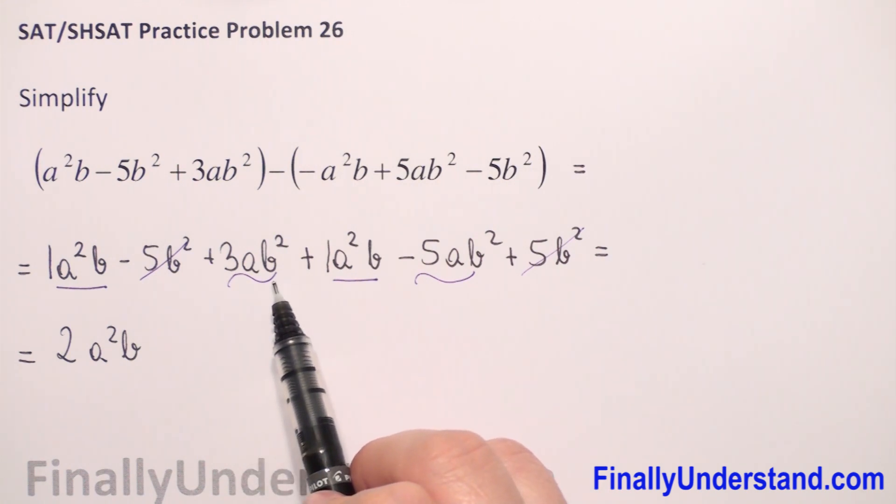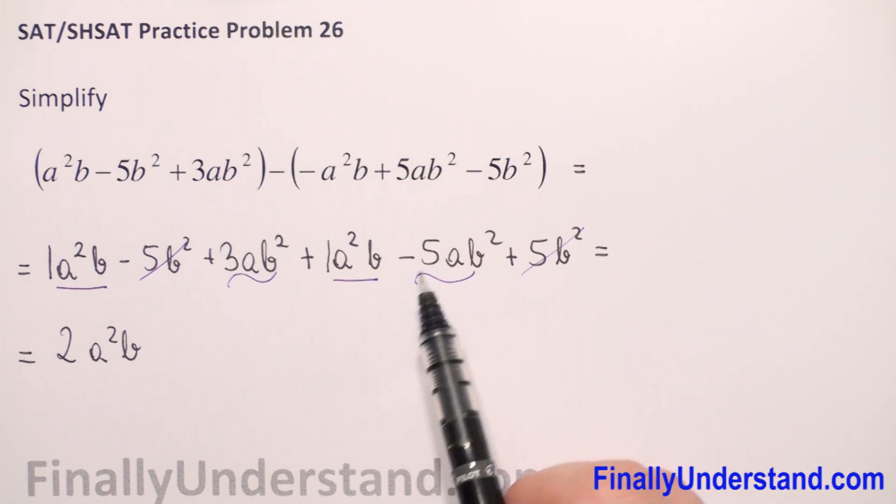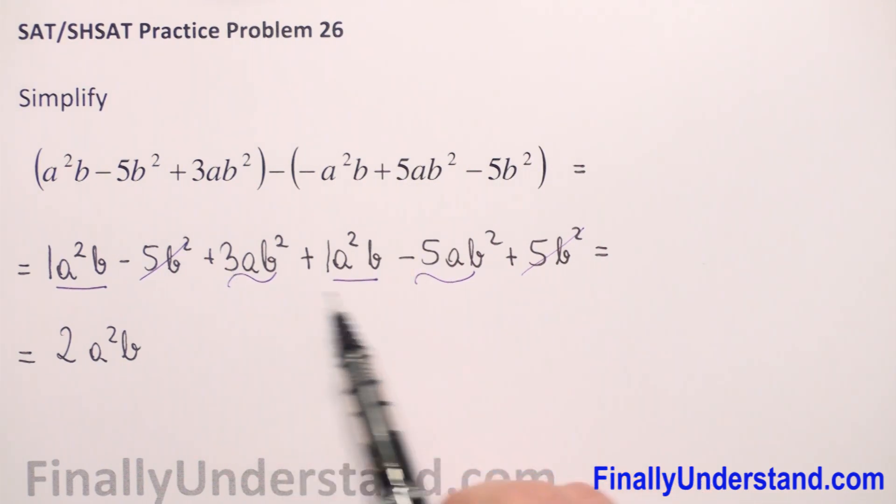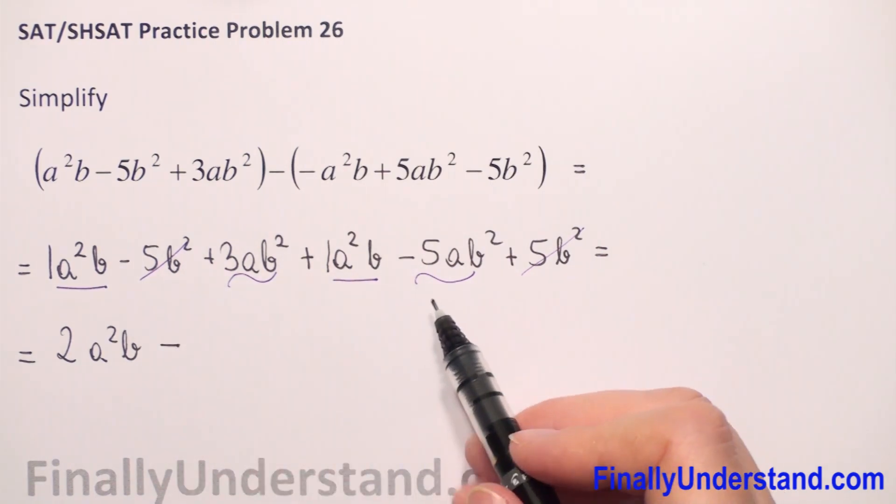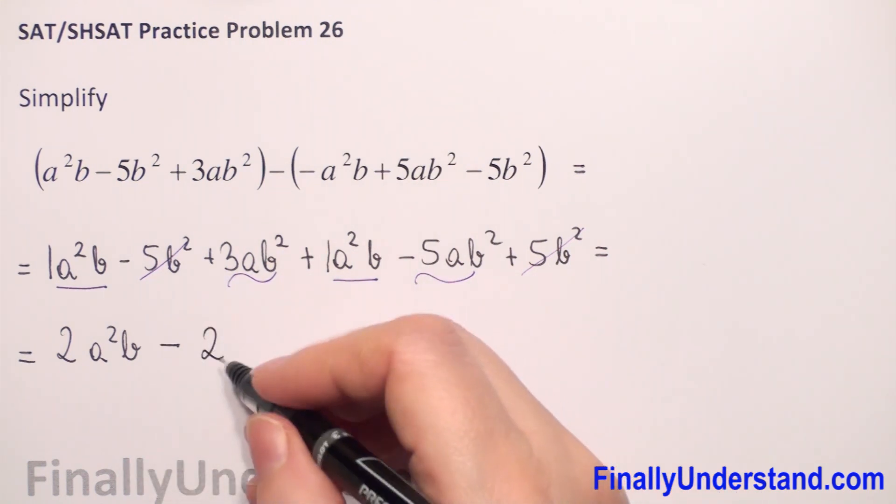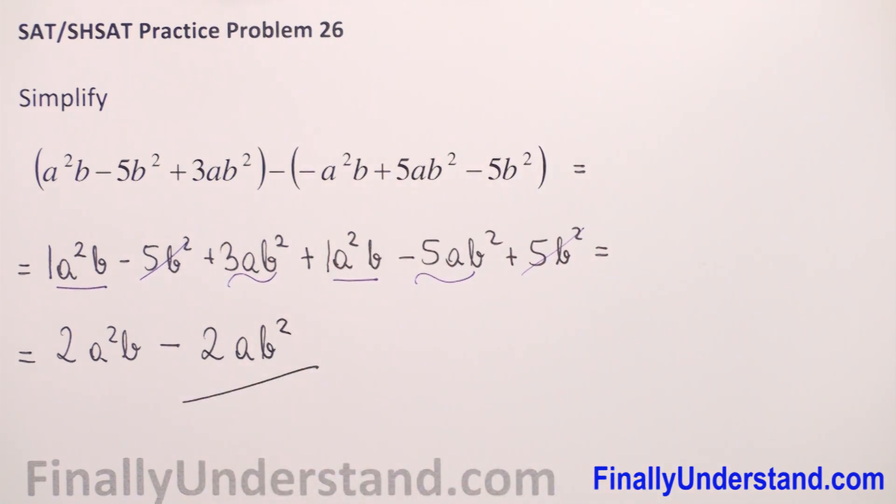We have 3ab² and negative 5ab². We copy the sign of the greatest number because 5 is greater than 3. So we copy negative sign. And we now just subtract the coefficients: 5 minus 3 is 2. And the rest we copy ab². This is my solution.